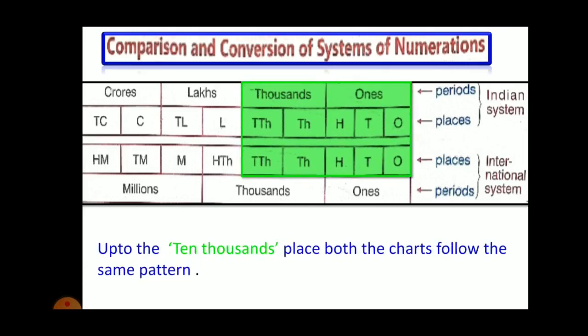For example, ones is equal to ones, tens is equal to tens, hundreds is equal to hundreds, thousands is equal to thousands, ten-thousands is equal to ten-thousands.